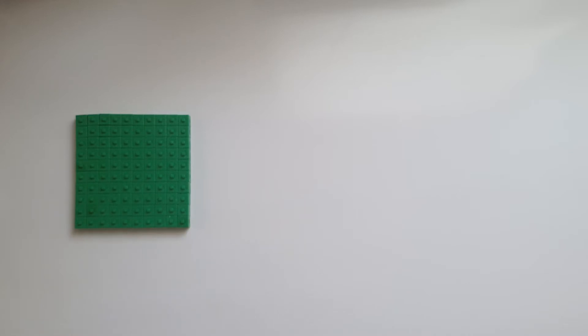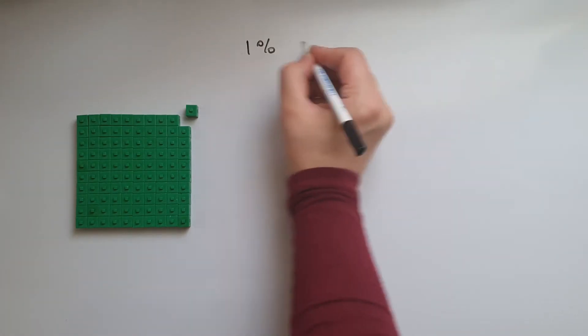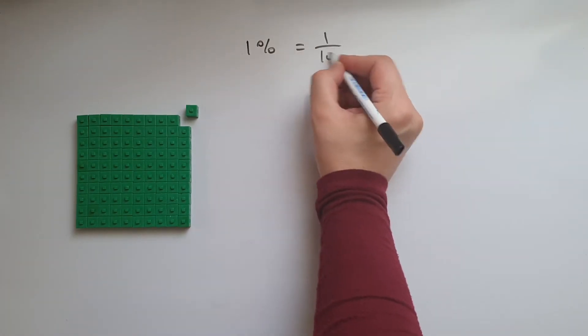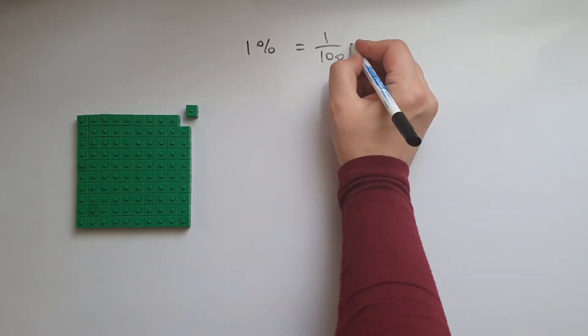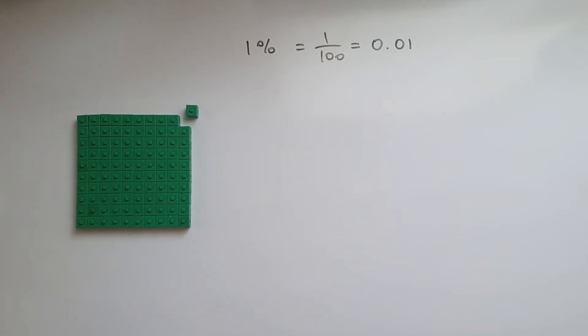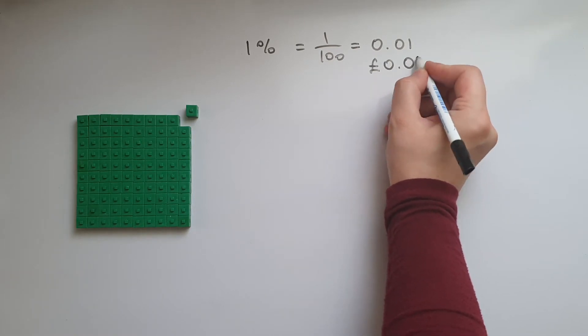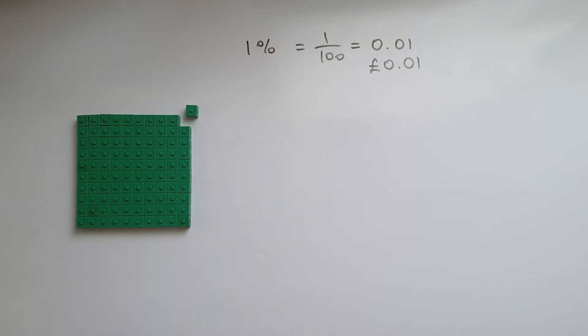In this video we'll learn to interpret percentage and percentage change as decimals and fractions. Percent means out of 100, so one percent is one out of 100 — that's the fraction for it. As a decimal we write that as 0.01. It's like one pence in a pound, and you know that we write a pence like this, so that can help you remember.